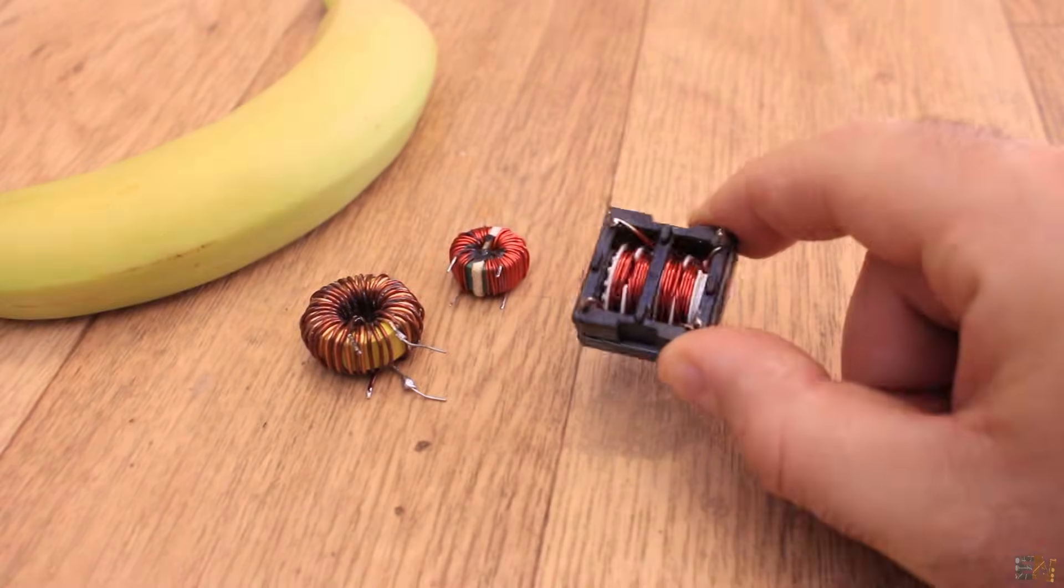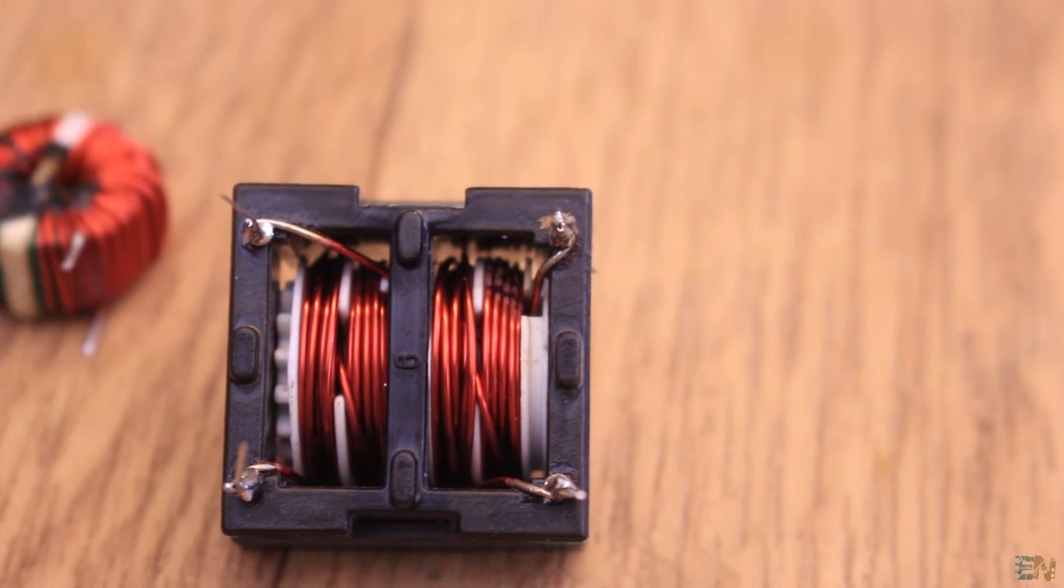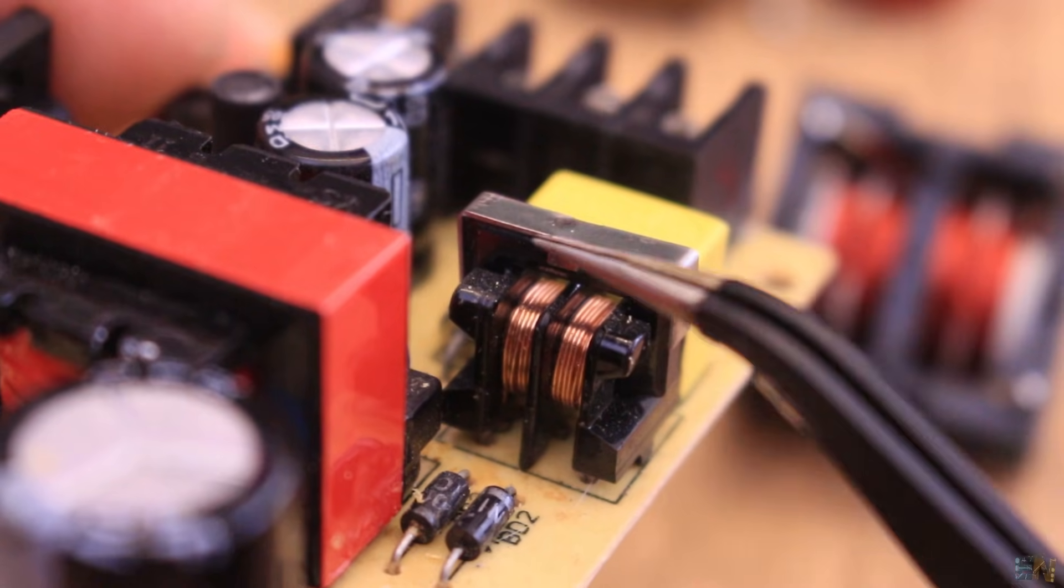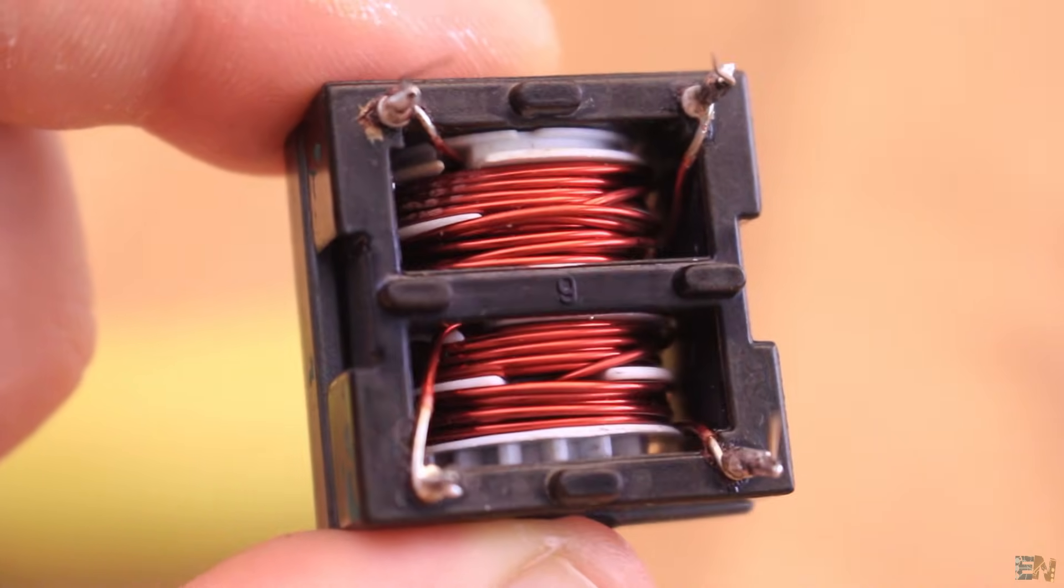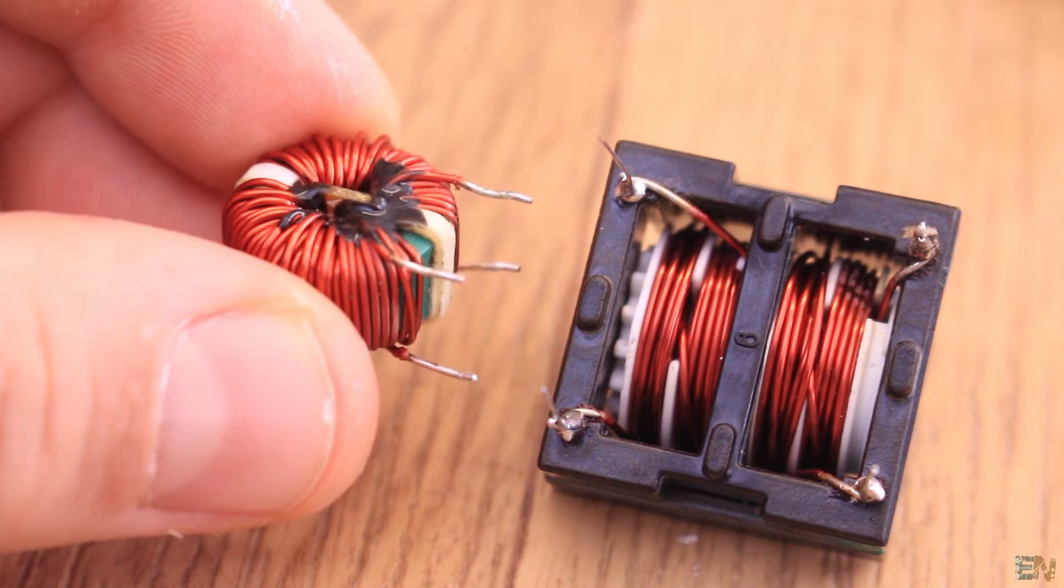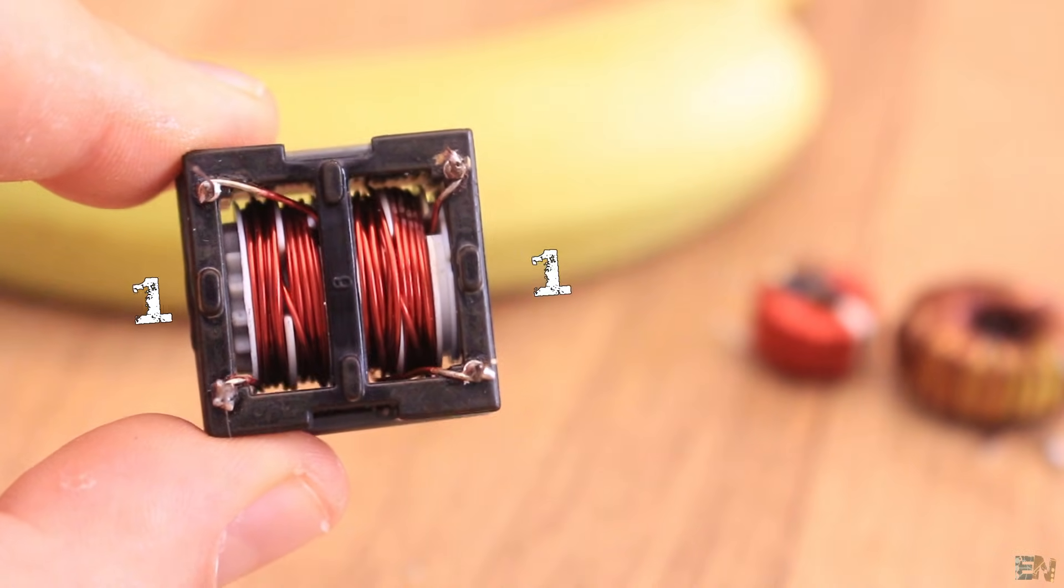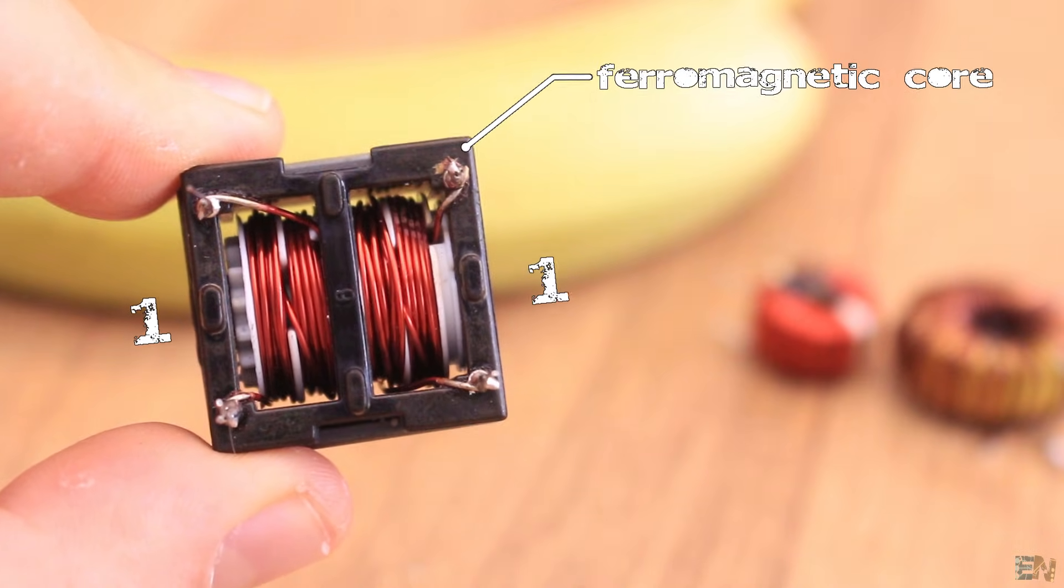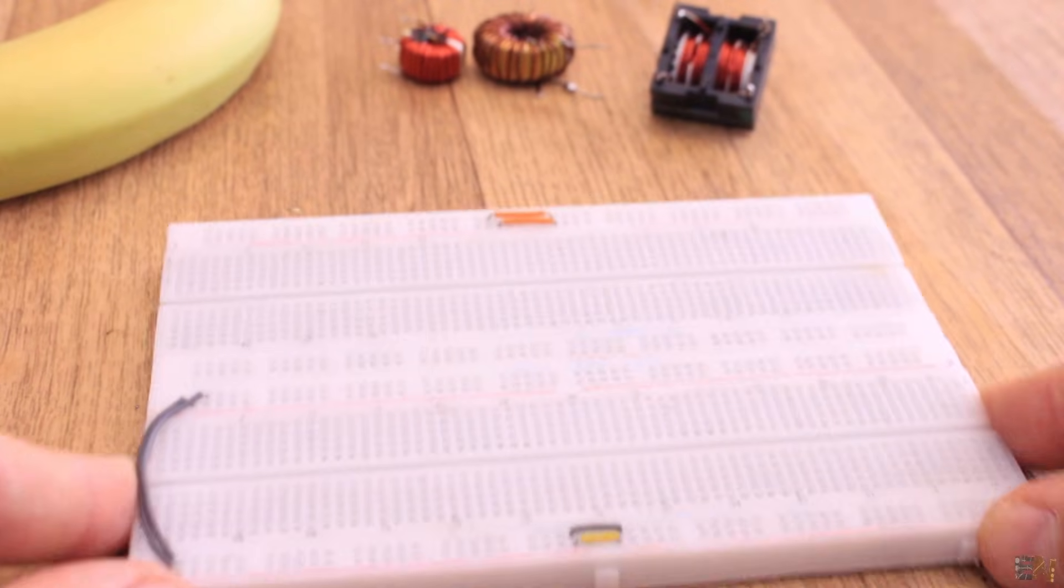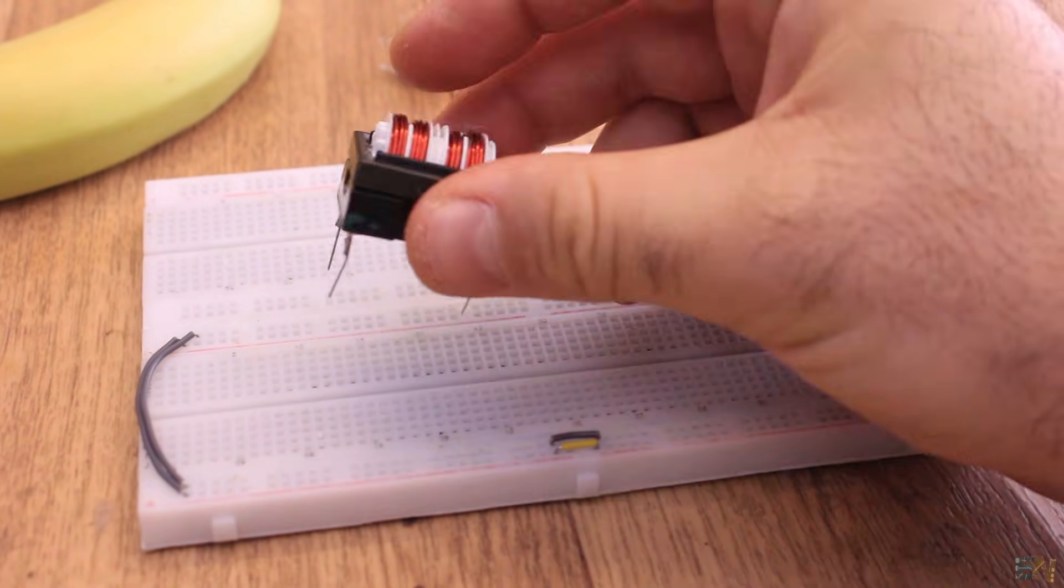What's up my friends, welcome back. This component here is called the choke and it is used in switching supplies to block higher frequencies while passing direct current. But we could use it today as a 1 to 1 transformer, because in the end that's what it is. We have two windings, one on each side with the same amount of turns and ferromagnetic material passing through, creating a transformer. We could use this in today's experiment as a flyback transformer and create a DC to DC converter.